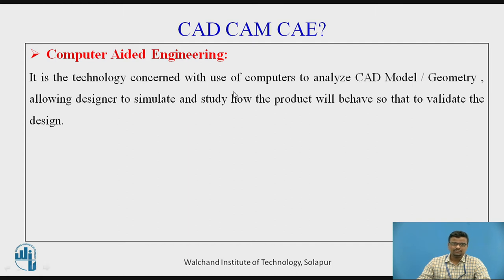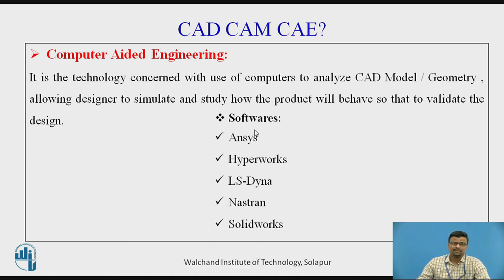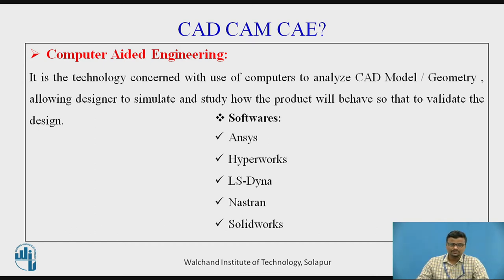Computer-aided engineering, also called engineering analysis, uses computers to analyze CAD models. The 3D model of any mechanical component is a prerequisite for engineering analysis. After providing load or thermal input, the design engineer can simulate and study how the product will behave, allowing validation of the design. Software used in CAE includes ANSYS, Hypermesh — which was originally used only for meshing but now also handles engineering analysis — and LS-DYNA, Nastran, and SolidWorks.